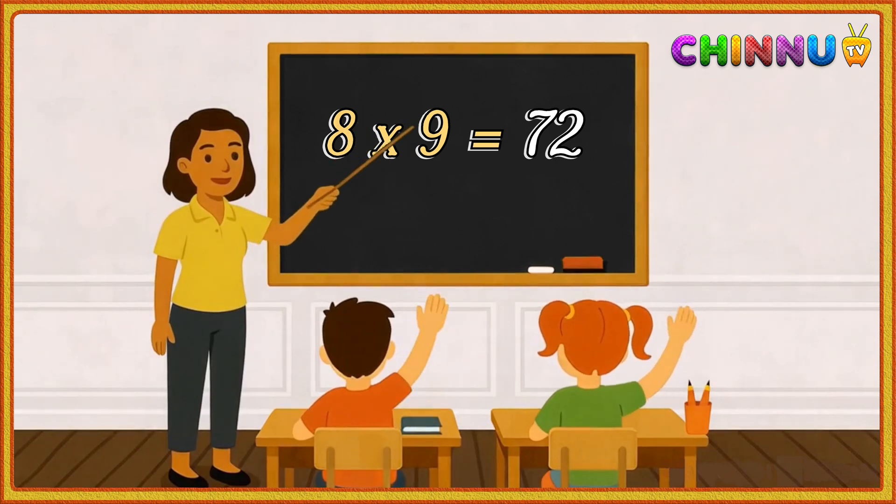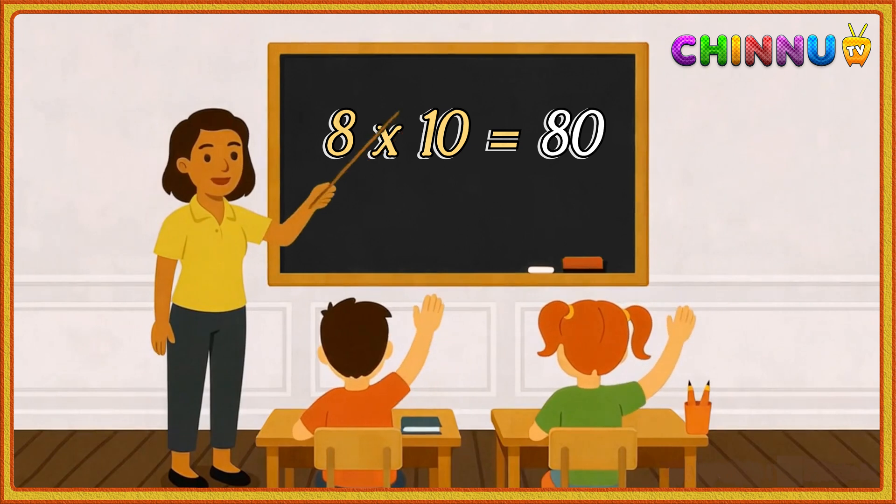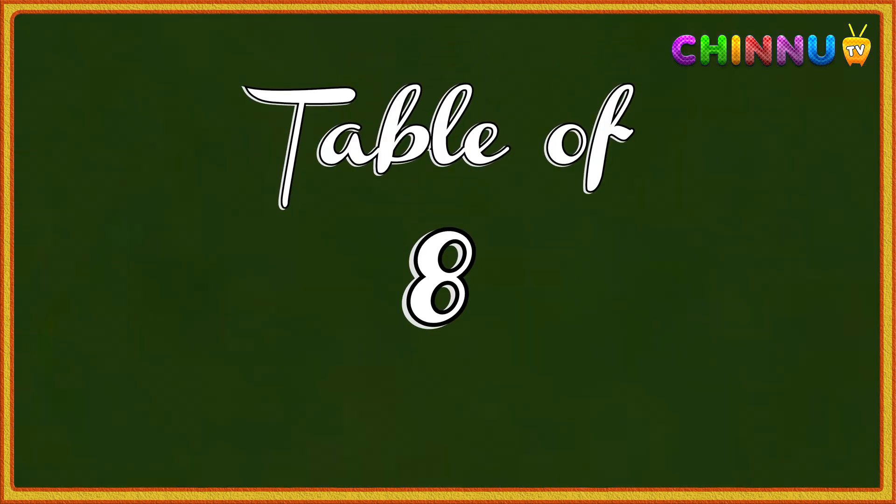Eight nines are seventy-two. Eight tens are eighty. Let's learn the table of eight one more time.